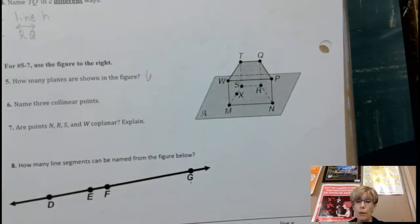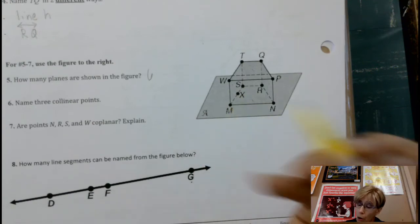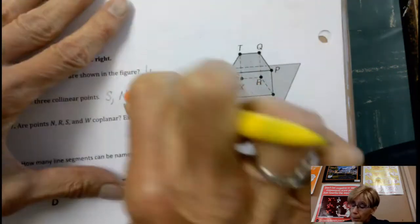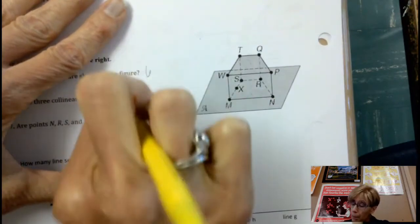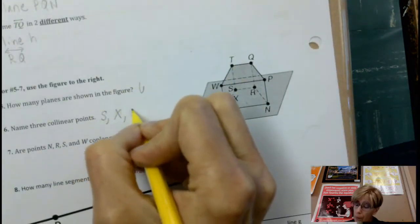Number seven, it says are points - oh darn it - are points N, R, S, and W coplanar? And N... but W is above this plane A.